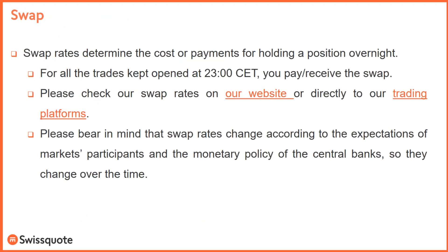Swap rates determine the cost of payments — because swap can be a debit or a credit for you. Swap rates determine the cost for holding a position overnight. For all positions kept open at 11 PM Central European time, which is 5 PM New York time, you pay or receive the swap according to the currency you are trading and whether you are long or short. I will show you directly on the platform how to check this information.